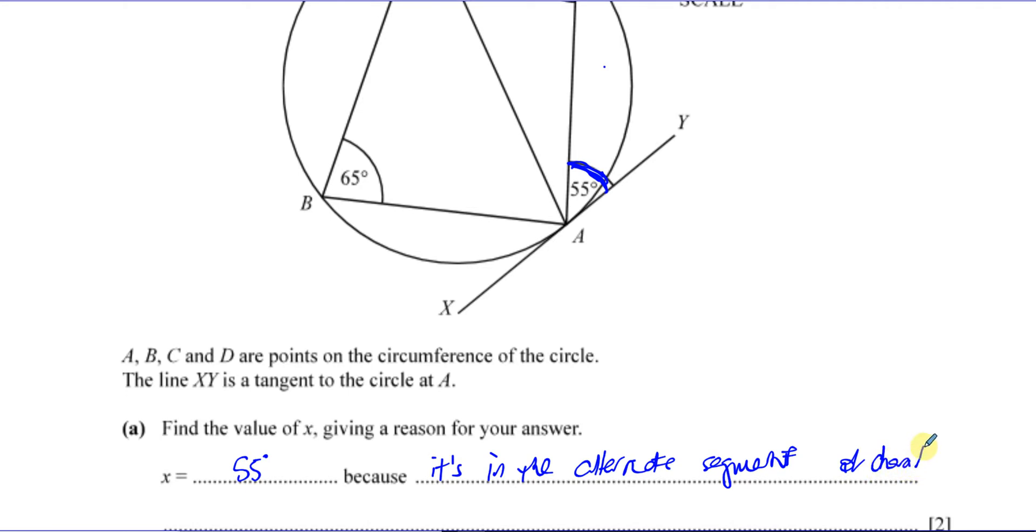Something like that. All they're looking for is the words, alternate segment. That's what they're looking for, alternate segment angles. So in fact, you just have to write, all you can write is alternate segment theorem. That's fine. Alternate segment theorem, and that's perfectly fine.